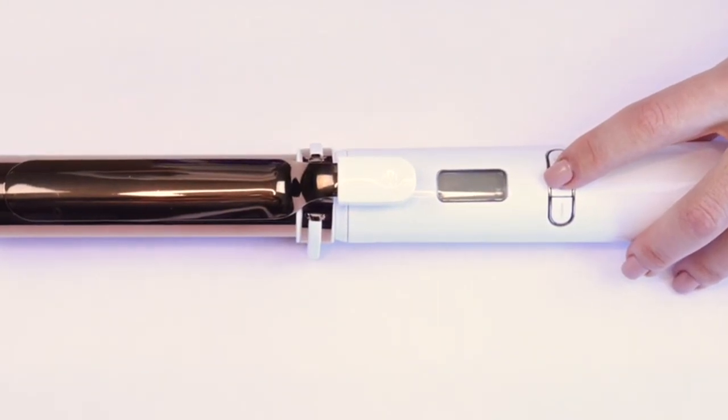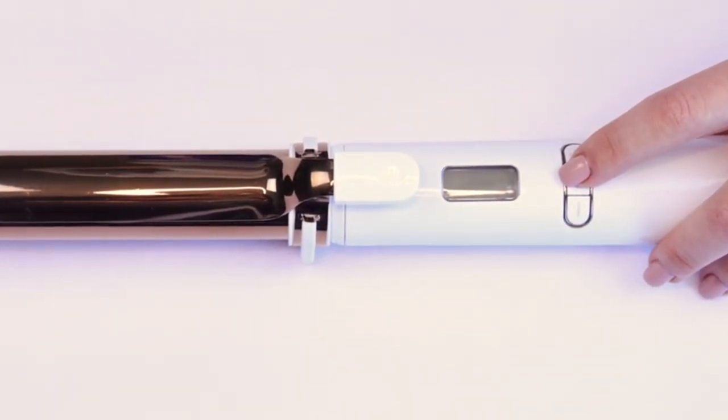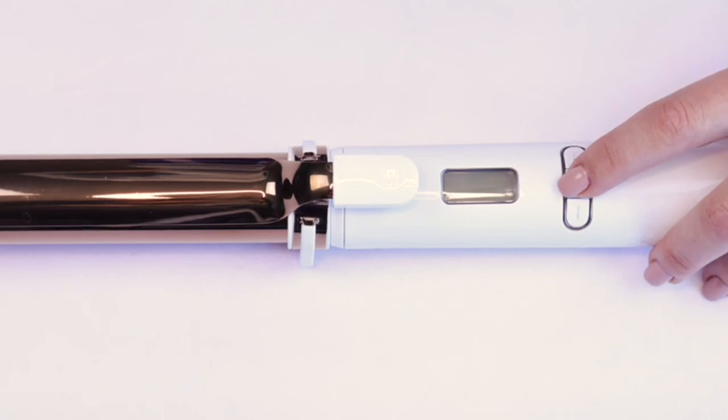First, to unlock your iron, you're going to want to short press it three times on the power button. One, two, three.